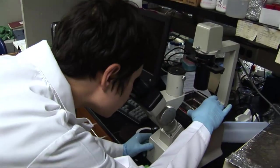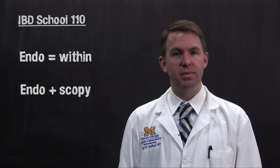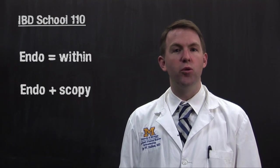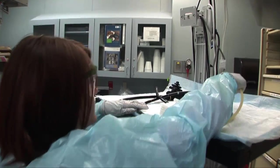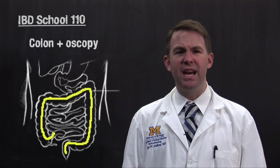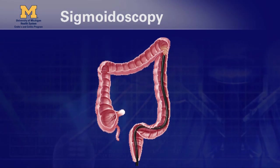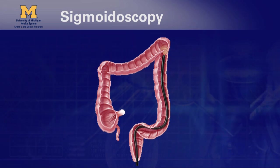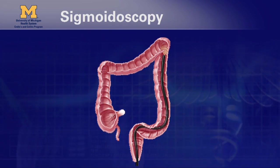Now that you know the GI tract, let's talk about the words we use to describe the different ways we look inside it. Terms ending in '-scope' refer to an instrument for viewing — we use a microscope to look at tiny things. 'Endo' means within, so endoscopy is a general term for using a scope to look inside the body. Colonoscopy is looking at the entire colon through the anus — often we can cross the IC valve and into the terminal ileum as well. Sigmoidoscopy is similar but only reaches the sigmoid colon and descending colon.